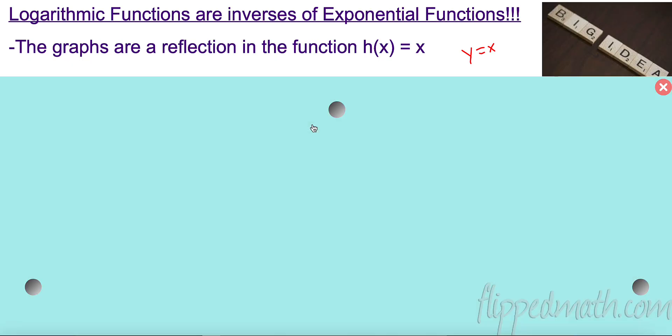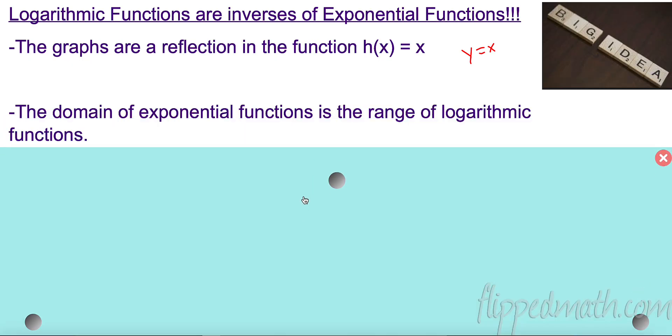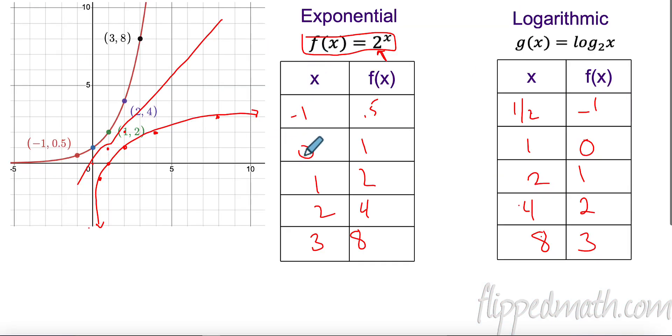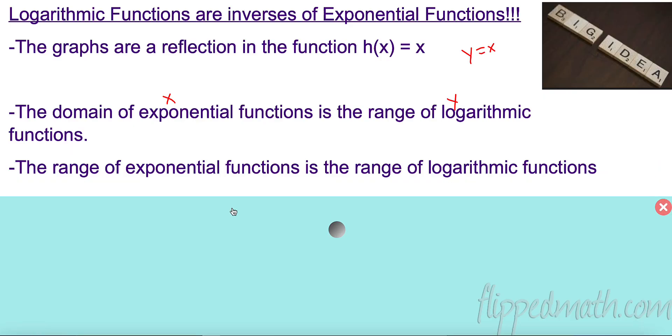But what does it mean? It's reflection. So this point reflects over to here. This point, 3, 8 reflects to here, 8, 3. There's a similar point all over that. That also means here, we know that this exponential has this asymptote here of the x-axis. So what is that going to mean here? There's going to be an asymptote here on the y-axis. So we have a reflection. We're going to talk more about graphs later, but I just want you to understand that because they're inverses, that's one of the things it means. It's going to be a reflection in the line y equals x. All right, that's great. What else cool, Mr. Sullivan? The domain of the exponential function is the range of the logarithmic function.